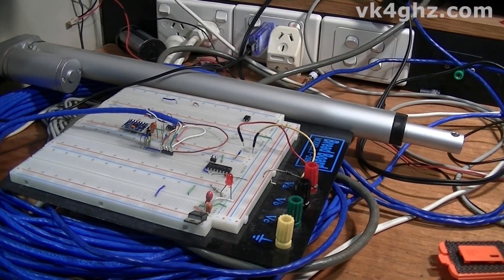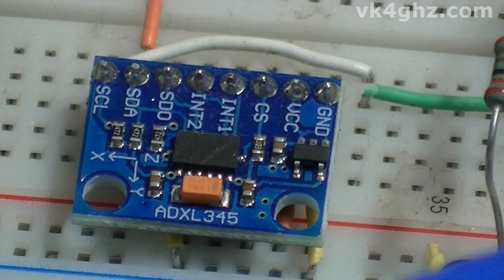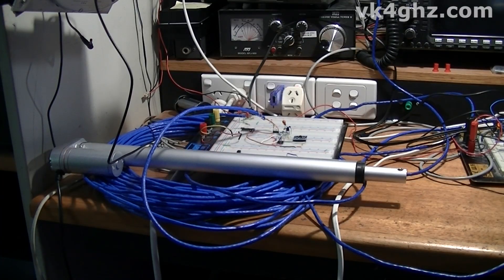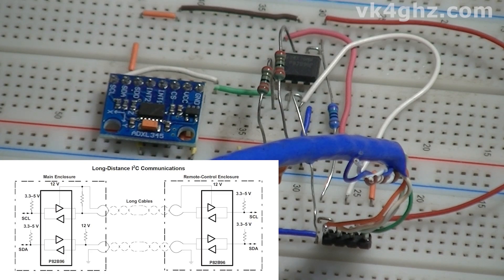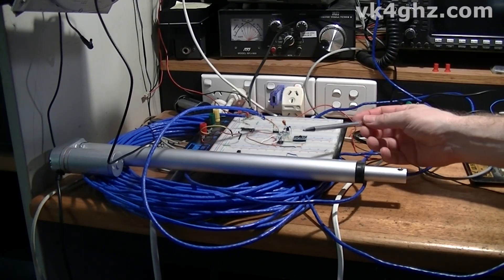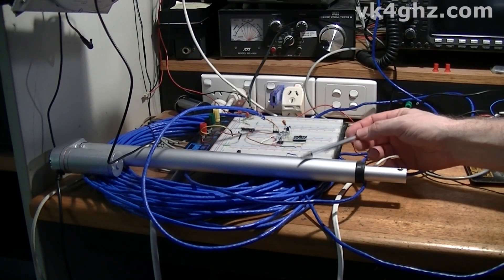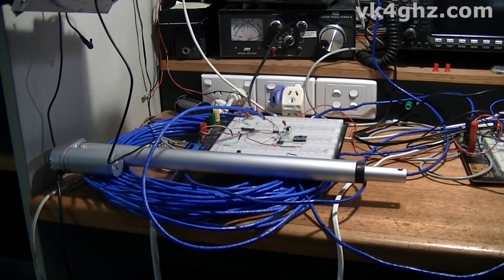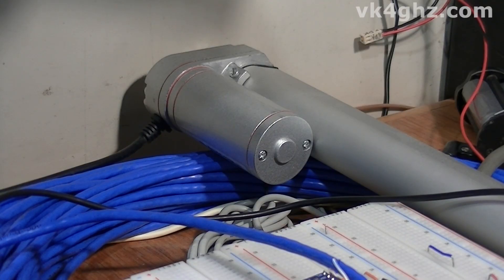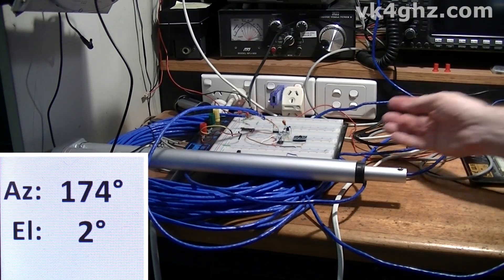Just to show you my elevation system — it's still on the breadboard. I'm using an ADXL345, this is off eBay, they're not particularly expensive. It's an i2c device communicating via a 30 meter run of cat5 cable via a pair of P82B96 bus transceivers, one at either end. And to complement my G800DXA azimuth rotator, I'm using one of these relatively inexpensive linear actuators off eBay.